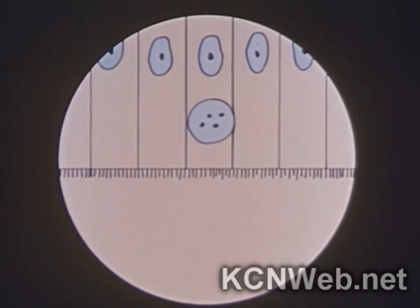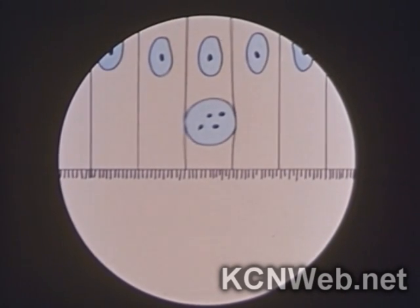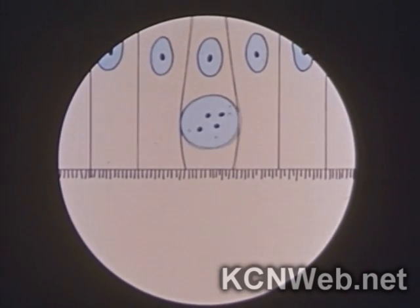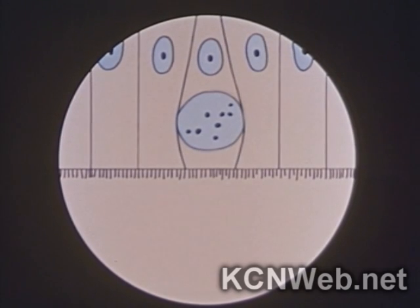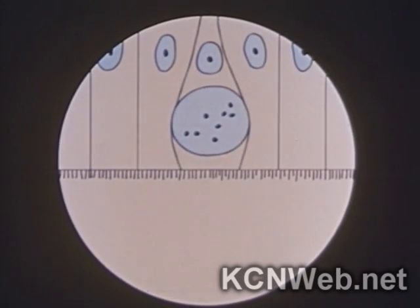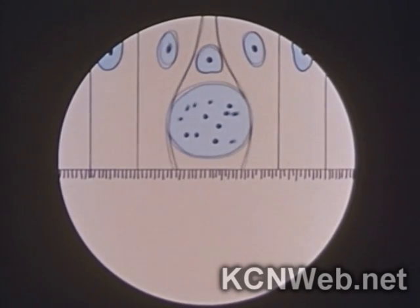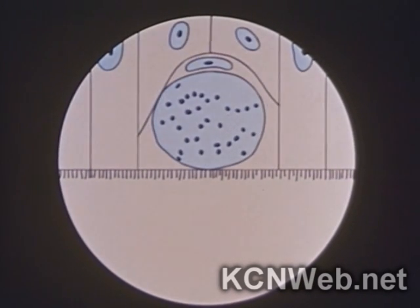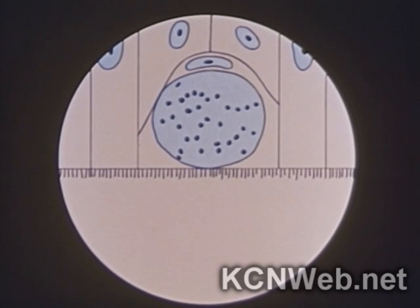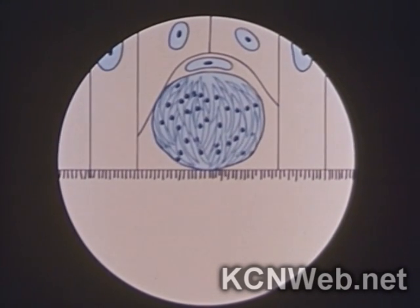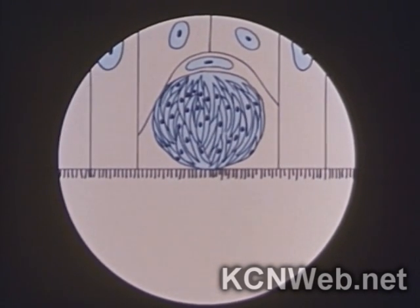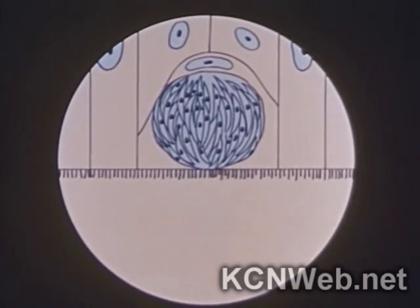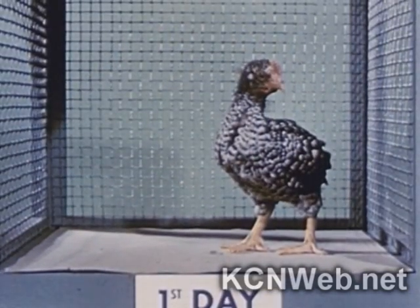Once inside the cell wall, the sporozoite develops into a rounded body enclosing a nucleus. This nucleus splits into two nuclei. These in turn split and the process repeats until, when growth stops, a considerable number of nuclei have developed. Then, around each nucleus, a new organism called a merozoite forms, fitting with the others into a clump resembling the segments of an orange.